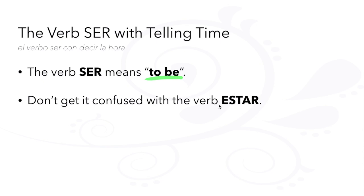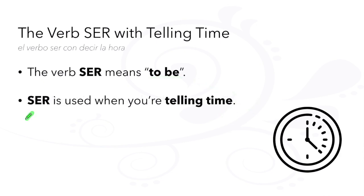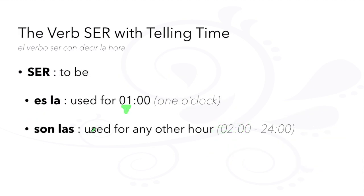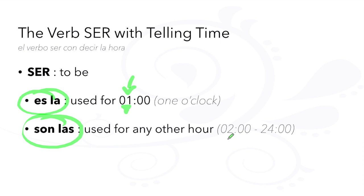The verb ser means 'to be,' but don't get it confused with estar, which also means 'to be.' Two conjugations of the verb ser are used to tell time: es or son. For any time during the one o'clock hour, we use the conjugation es la to indicate one hour. For the rest, we use son las, because there is more than one hour — two through possibly twenty-four.